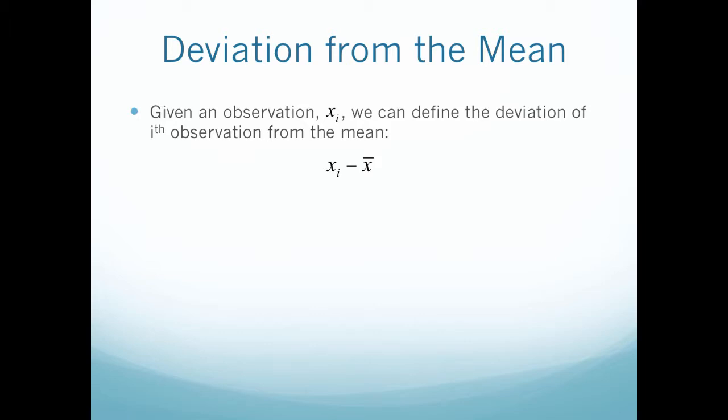Given an observation x sub i, we can define the deviation of the i-th measurement from the mean: x sub i minus x bar. Another way to think about this is the distance away from one value to the mean.